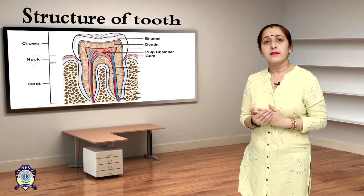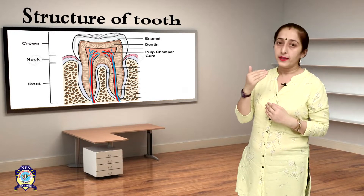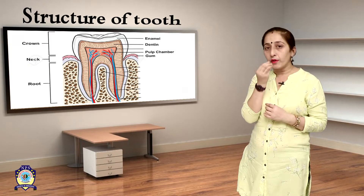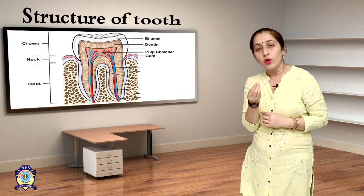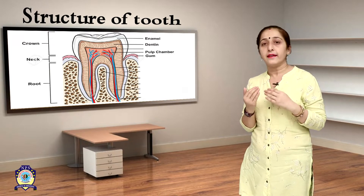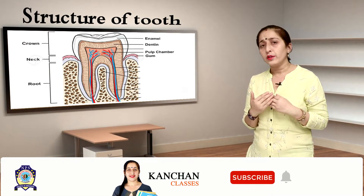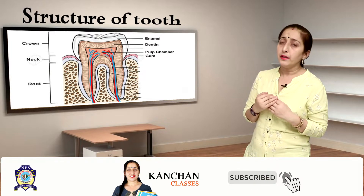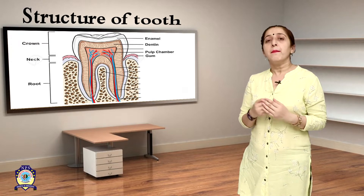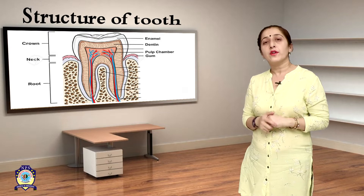So to summarize the structure of our tooth: it has three parts — the crown, the neck, and the root. The hard outer covering is called enamel. Below the enamel is dentine. Dentine protects the inner part called pulp. Below the dentine, there is a pulp cavity which consists of blood vessels and nerves.